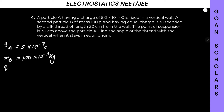Particle B has equal charge, meaning QB equals QA. It is suspended by a silk thread of length 30 centimeters from the wall. The point of suspension is 30 centimeters above particle A. So we have those key measurements noted — we will make a diagram shortly.